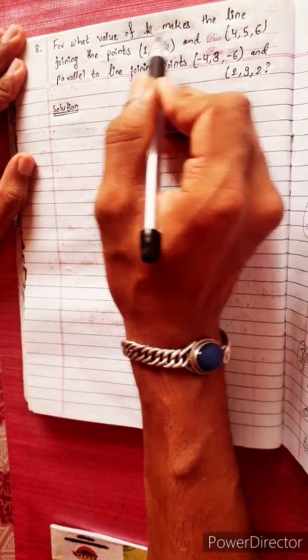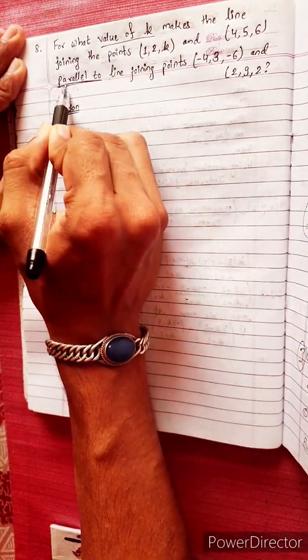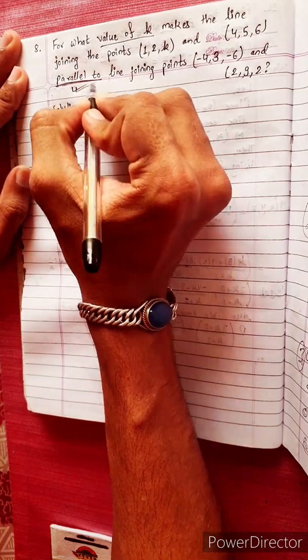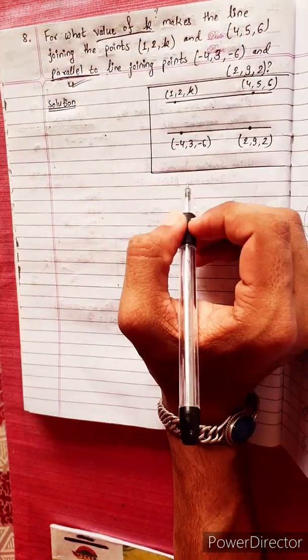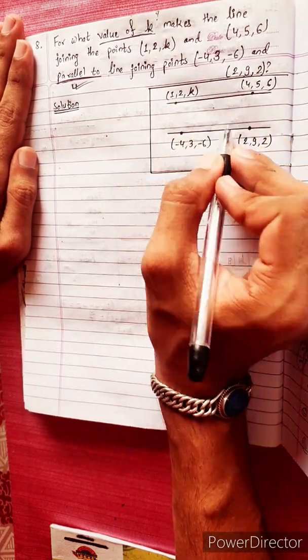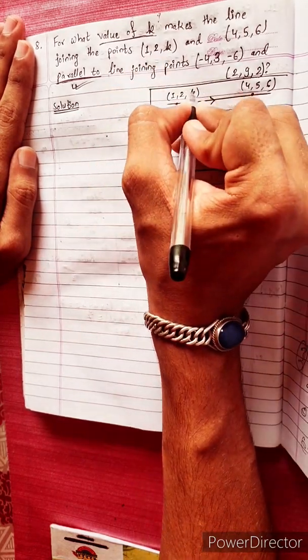For what value of k make the line joining the point parallel? We need to prove the parallel condition and find k's value. The two points join to form a line, and we need to find k such that the lines are parallel.